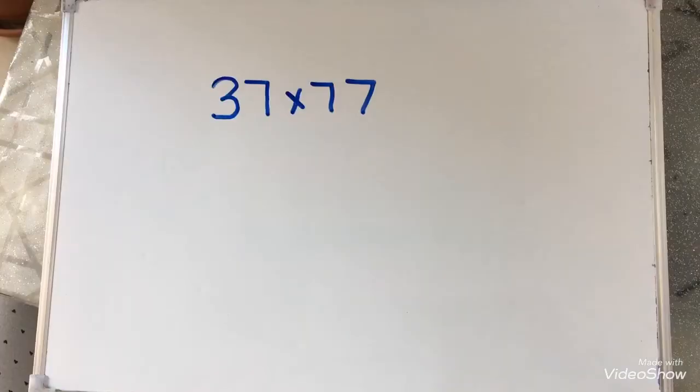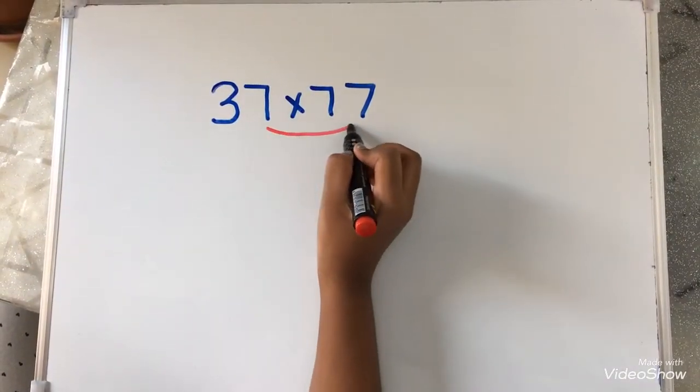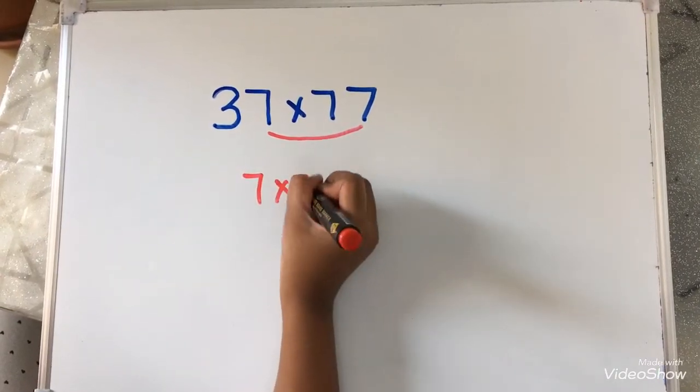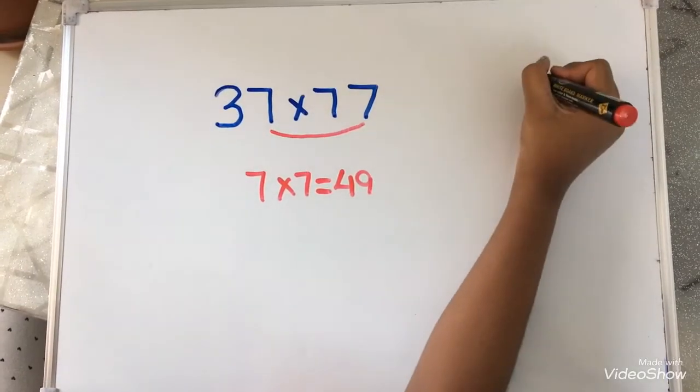Now, I am going to multiply 7 into 7. So, 7 into 7 equals to 49. I am going to write 49 over here.